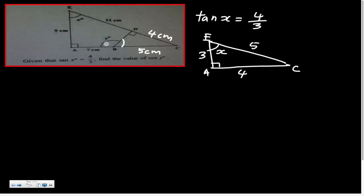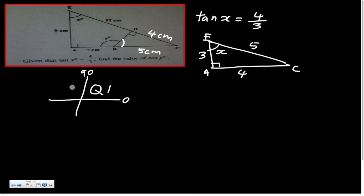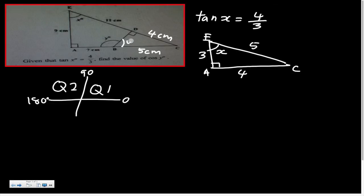When the angle is bigger than 90 degrees, it falls in the second quadrant. The first quadrant is from 0 to 90 degrees and the second quadrant is from 90 to 180 degrees. One straight line is 180 degrees, so this angle must be less than 180. We can use 180 minus this angle to get a reference angle, which I'll call y1.